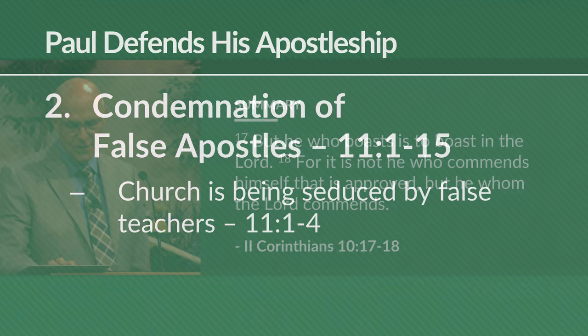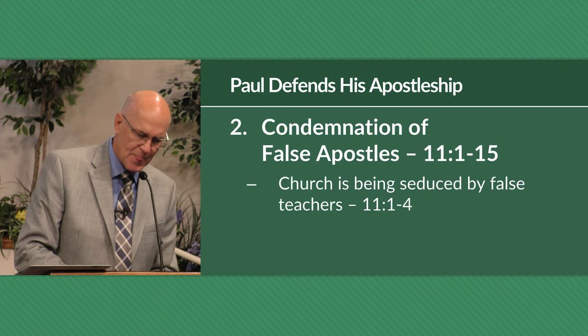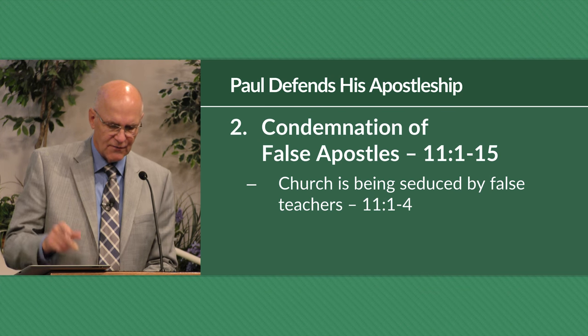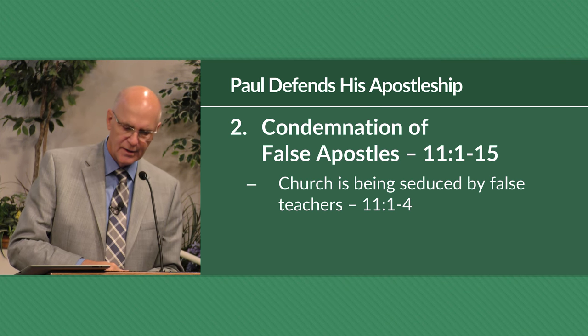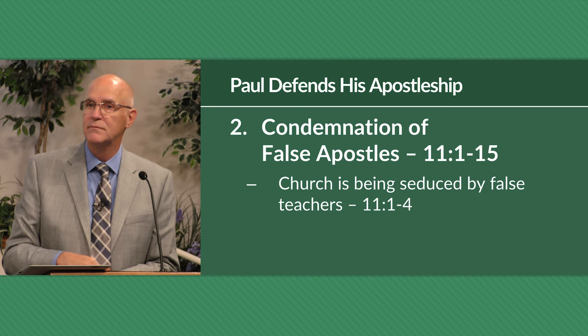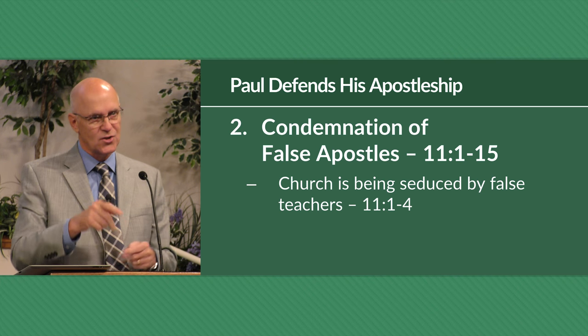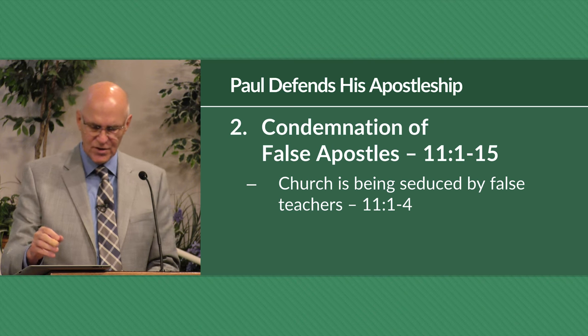Now Paul moves a step further — from talking about himself to a condemnation of the false apostles. He speaks plainly about the character and motives of those claiming to be superior apostles in the Corinthian church. First, he says the Corinthians are being seduced by false teachers. Moving to chapter 11, he says: 'I wish you would bear with me in a little foolishness. For I am jealous for you with a godly jealousy, for I betrothed you to one husband, so that to Christ I might present you as a pure virgin.'